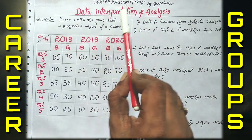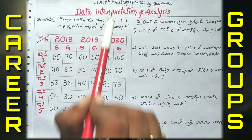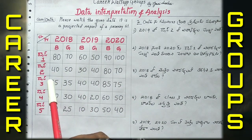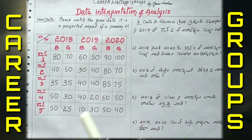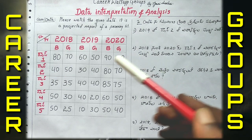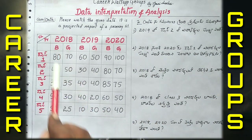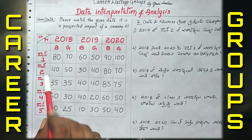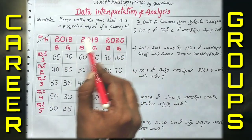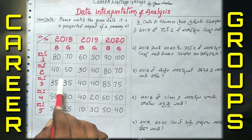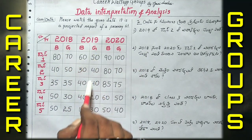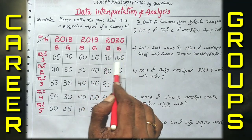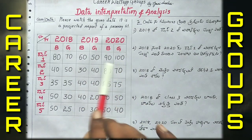Please watch the given data. It is a projected report of a primary school. Now we have to do the project report. In the 20th grade, B is boys and G is girls. In the 5th grade of the primary school, the boys and girls data is given for each class.